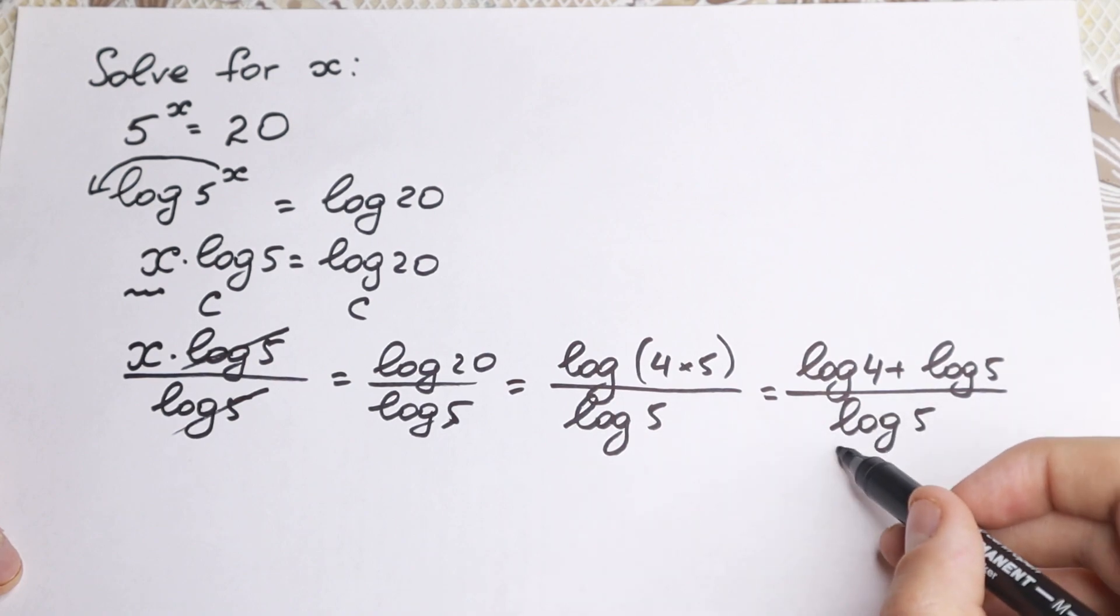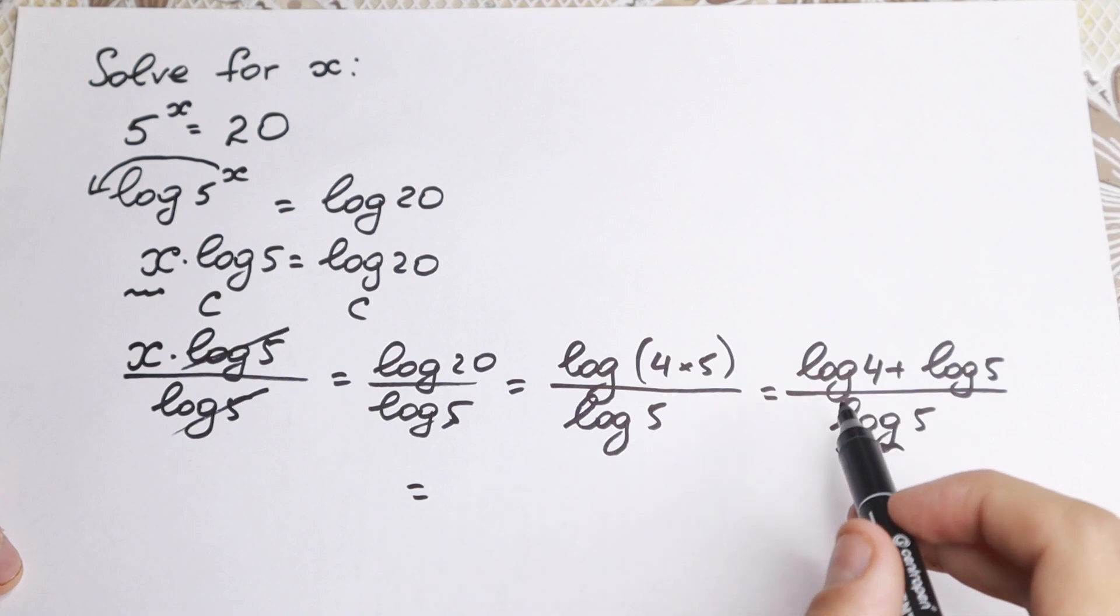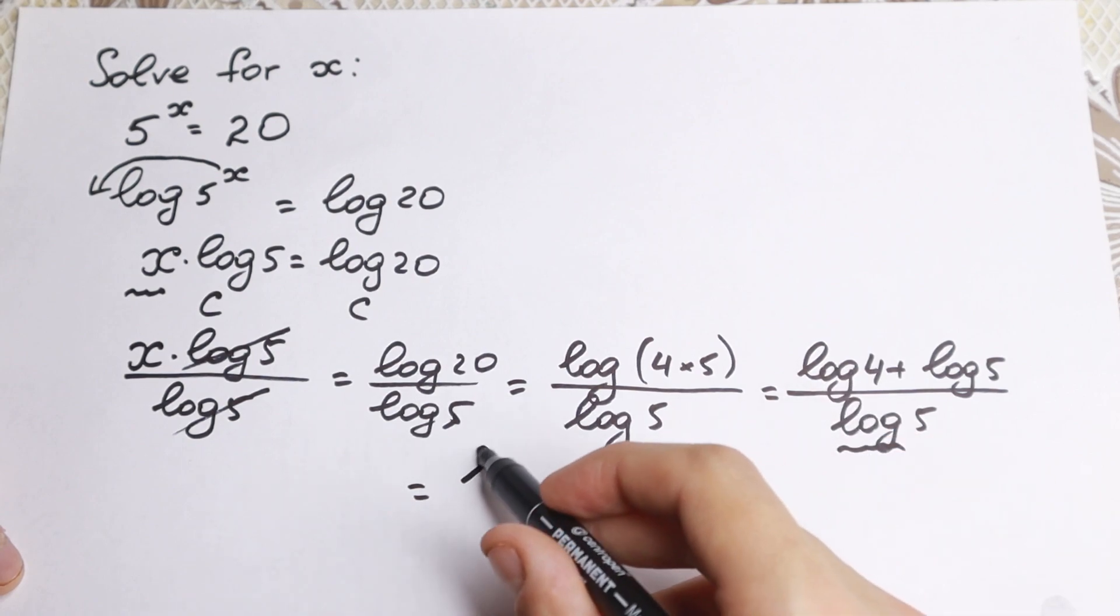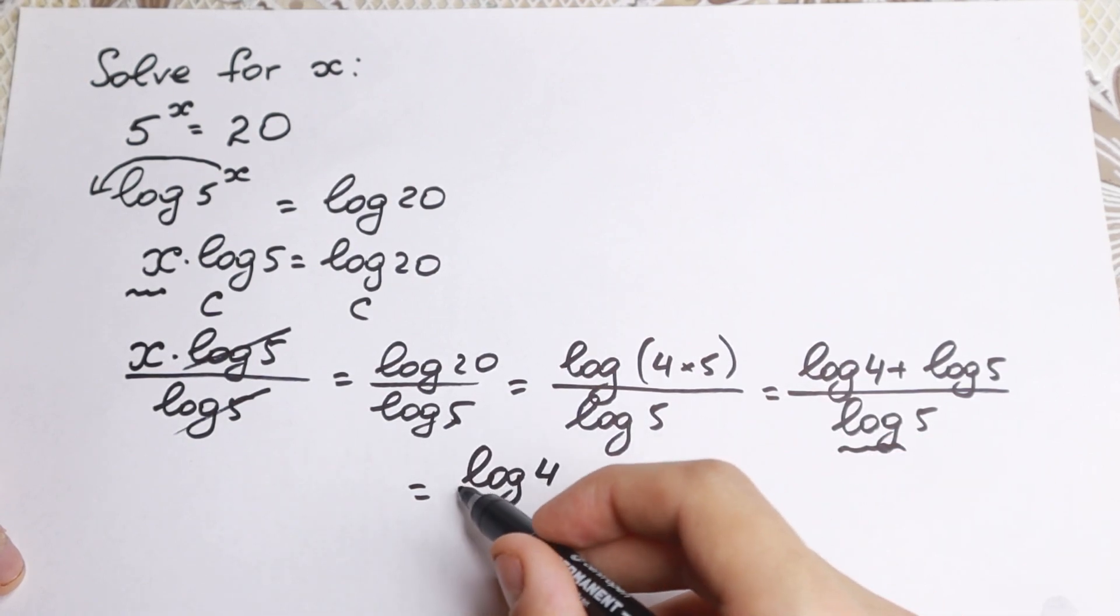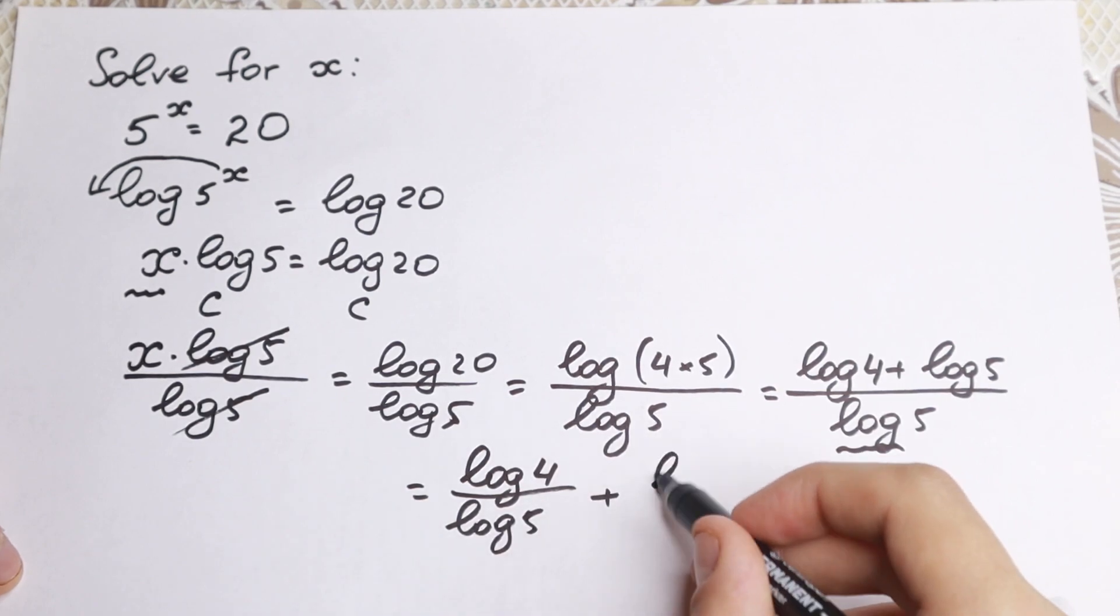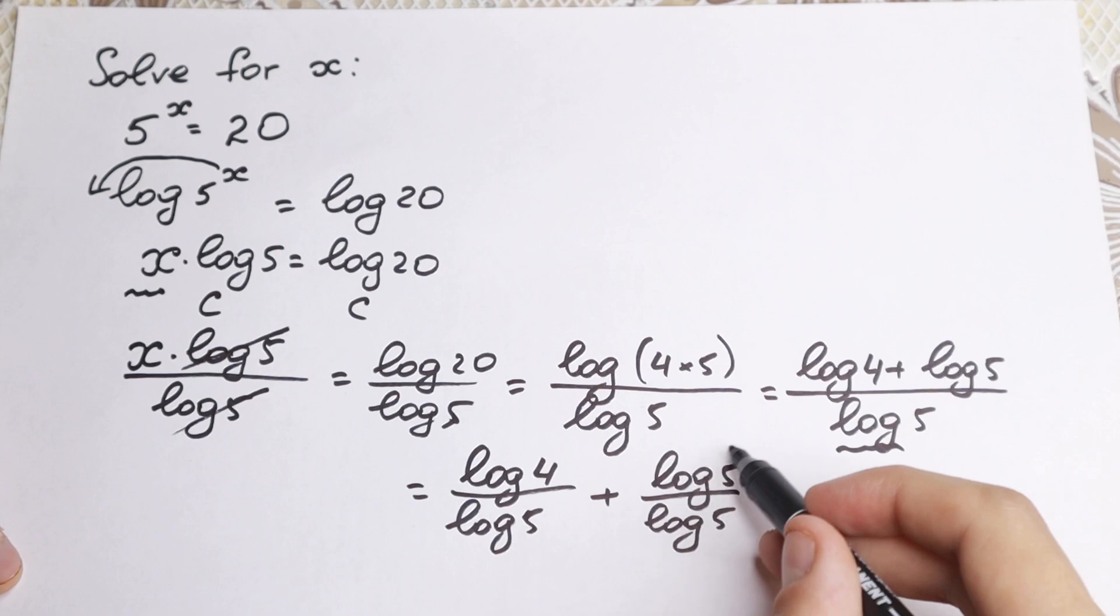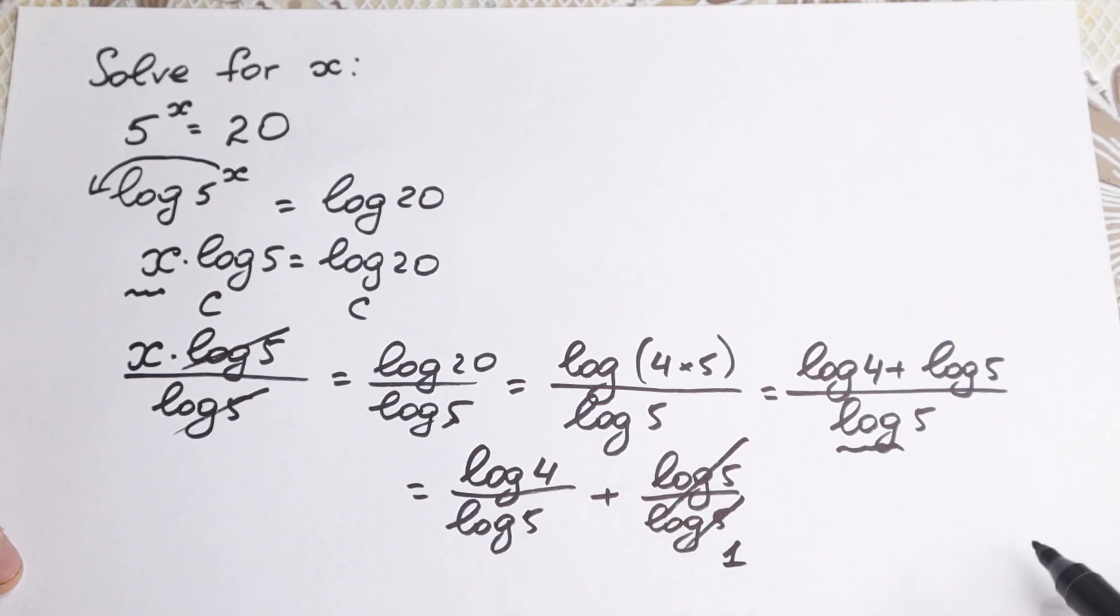So we have the same log right here and right here, and if we divide it by parts, so if we divide this by this one, we can do this. So log 4 over log 5 plus log 5 over log 5. And if you look closely to this, right here in this fraction, we can easily cancel. So this is equal to 1, this fraction.